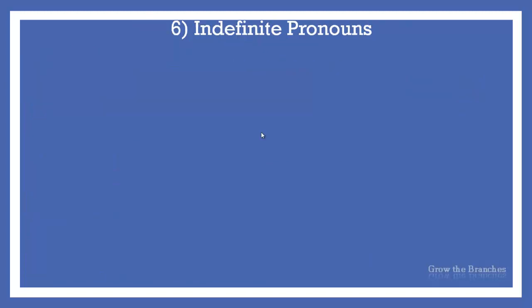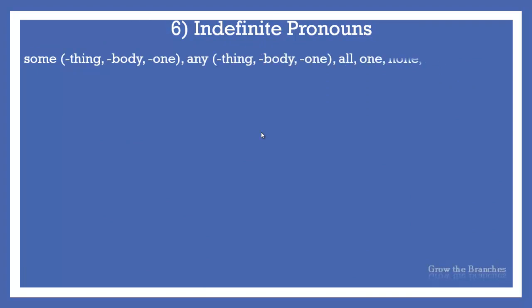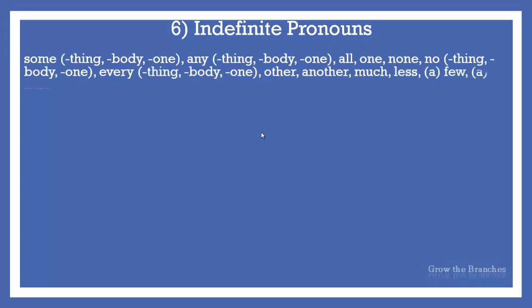Indefinite pronouns. This is a group containing the pronouns: something, somebody, someone, any, anything, anybody, anyone, all, one, none, nothing, every, other, another, much, less, a few, a little, enough, each, either, neither. Just remember that these words can also be determiners and quantifiers when they precede a noun.